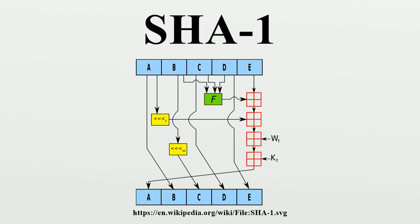Both MD5 and SHA-1 are descended from MD4. SHA-1 hashing is also used in distributed revision control systems like Git, Mercurial, and Monotone to identify revisions and to detect data corruption or tampering. The algorithm has also been used on Nintendo's Wii gaming console for signature verification when booting, but a significant flaw in the first implementations allowed an attacker to bypass the system's security scheme.